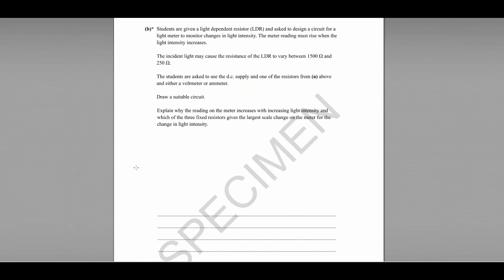Part B tells us that students are given a light dependent resistor and asked to design a circuit for a light meter to monitor changes in light intensity. The meter reading must rise when the light intensity increases. The LDR resistance varies between 1500 ohms and 250 ohms. Students must use the DC supply, one of the resistors from part A, and either a voltmeter or an ammeter.